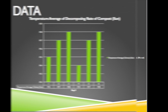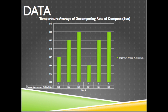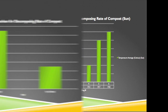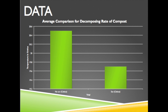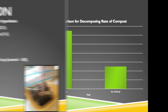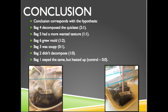These are some average graphs for the compost temperatures. My conclusion corresponds with the hypothesis. Bag 4 decomposed the quickest. Bag 5 had a more wanted texture, though. Bag 6 grew mold. Bag 3 was extremely soupy. Bag 2 didn't decompose. Bag 1, also the control, stayed the same.